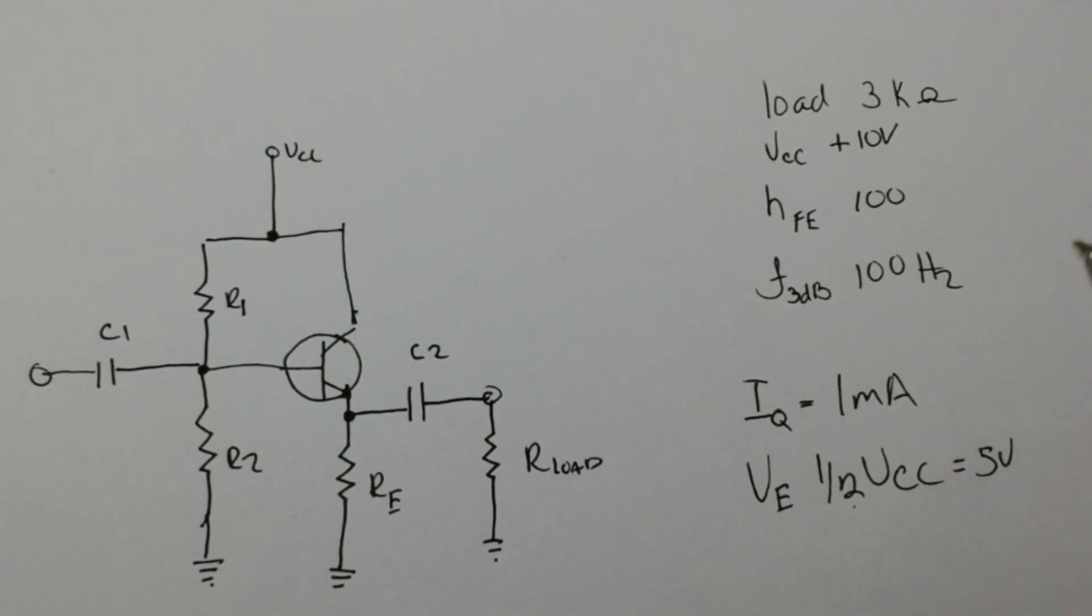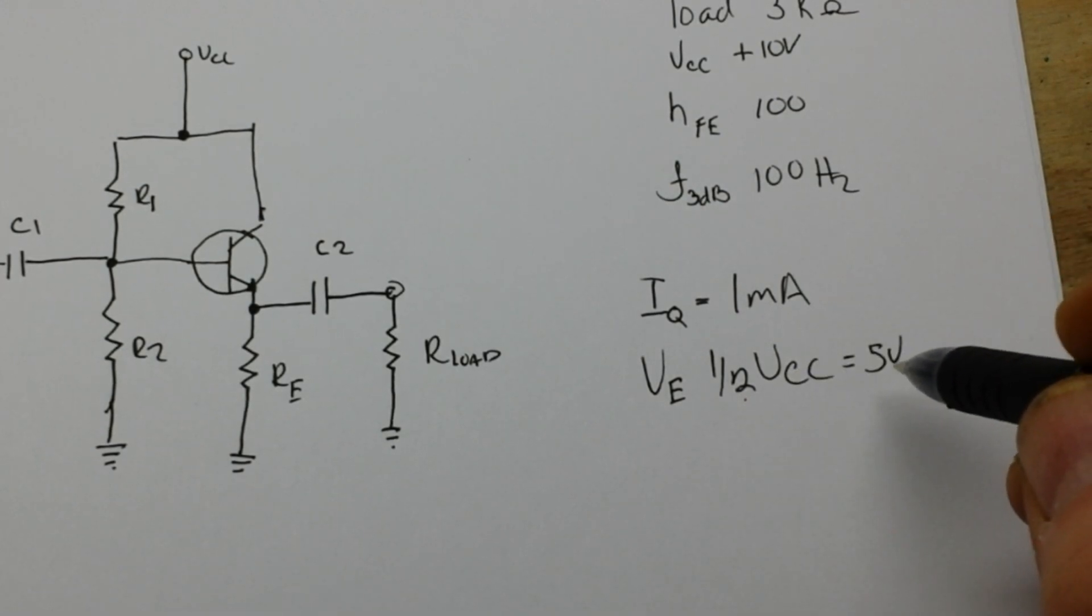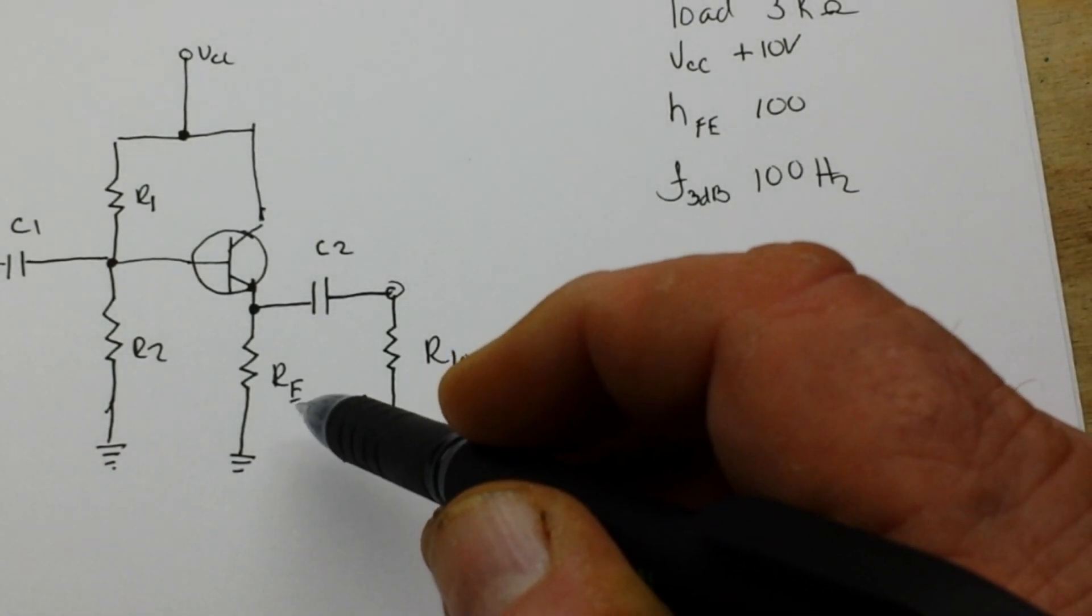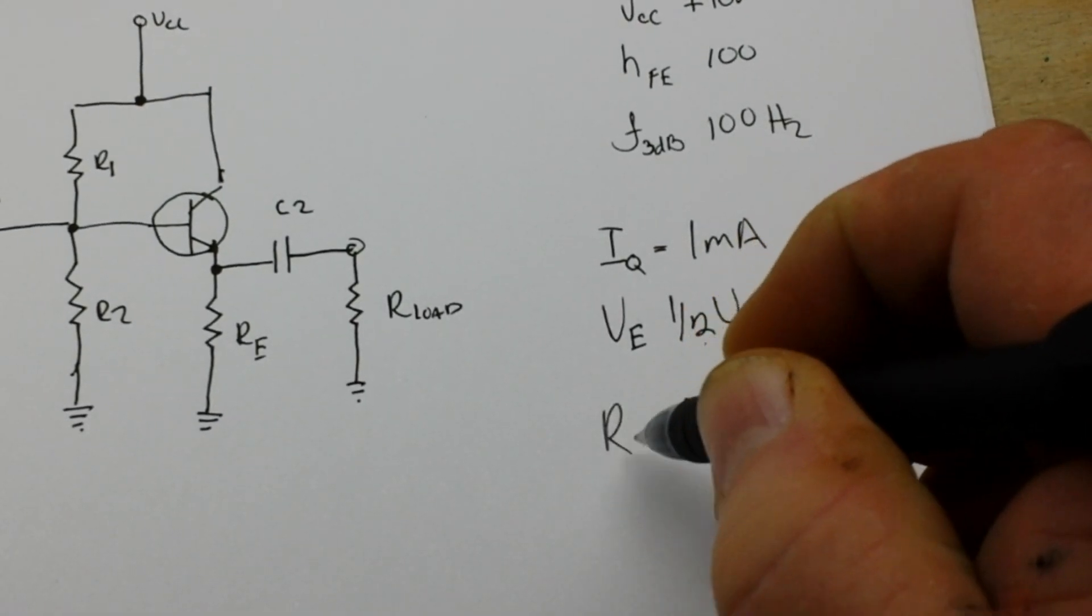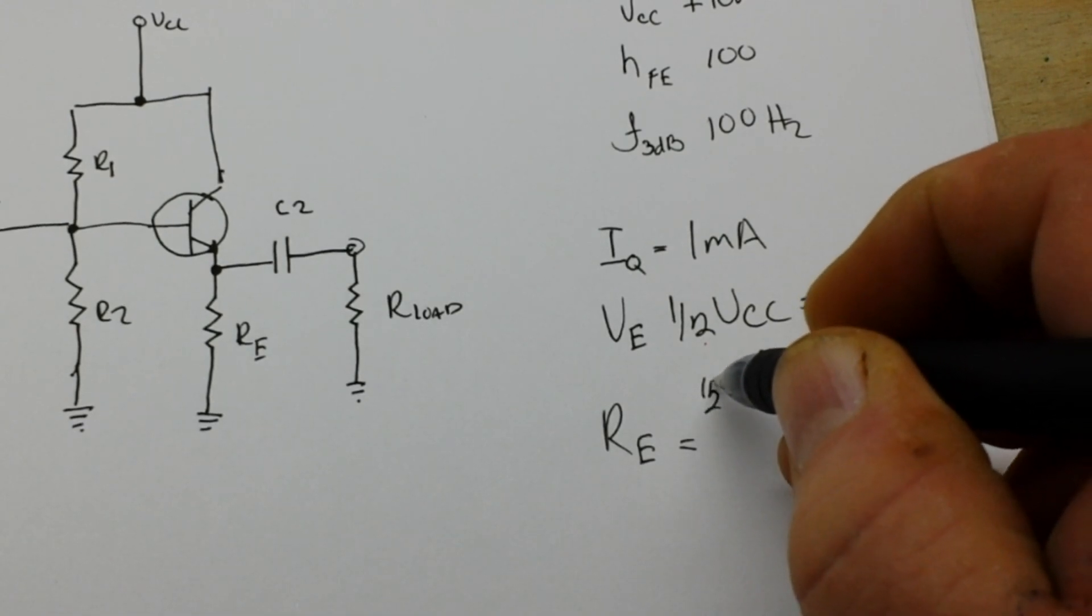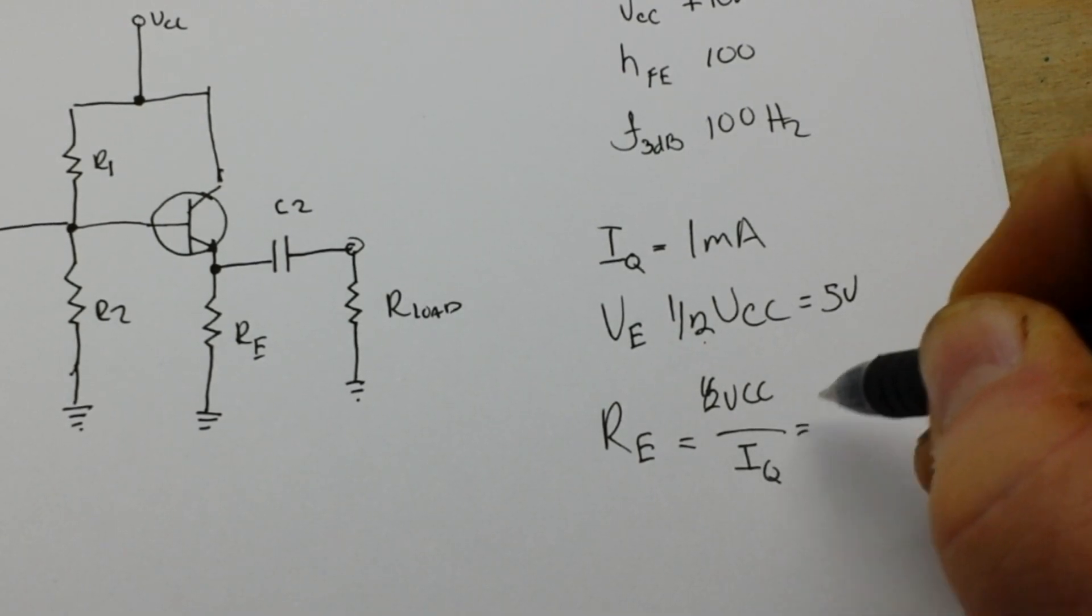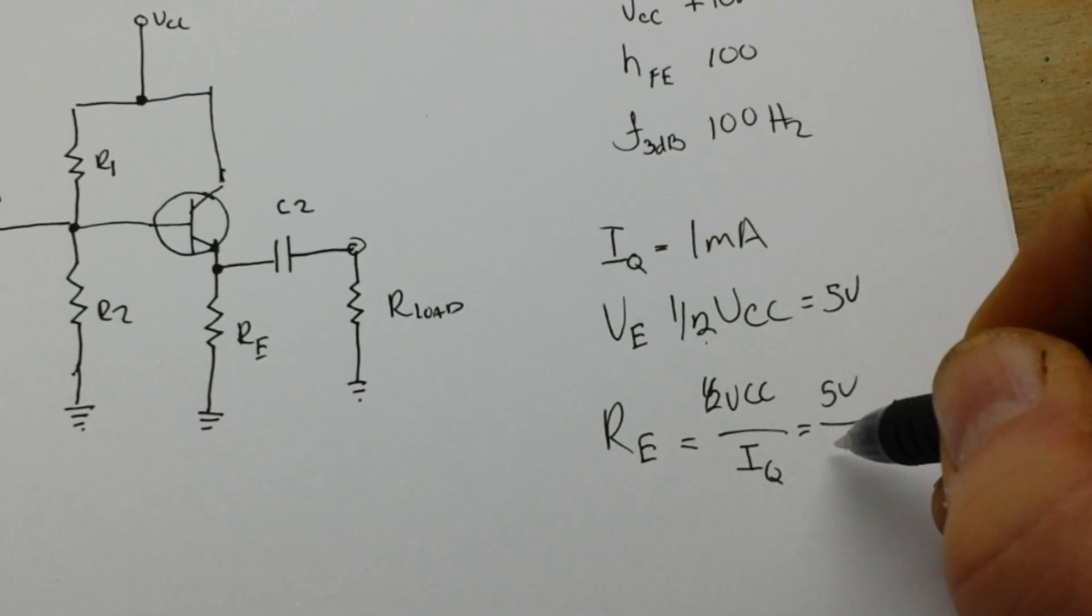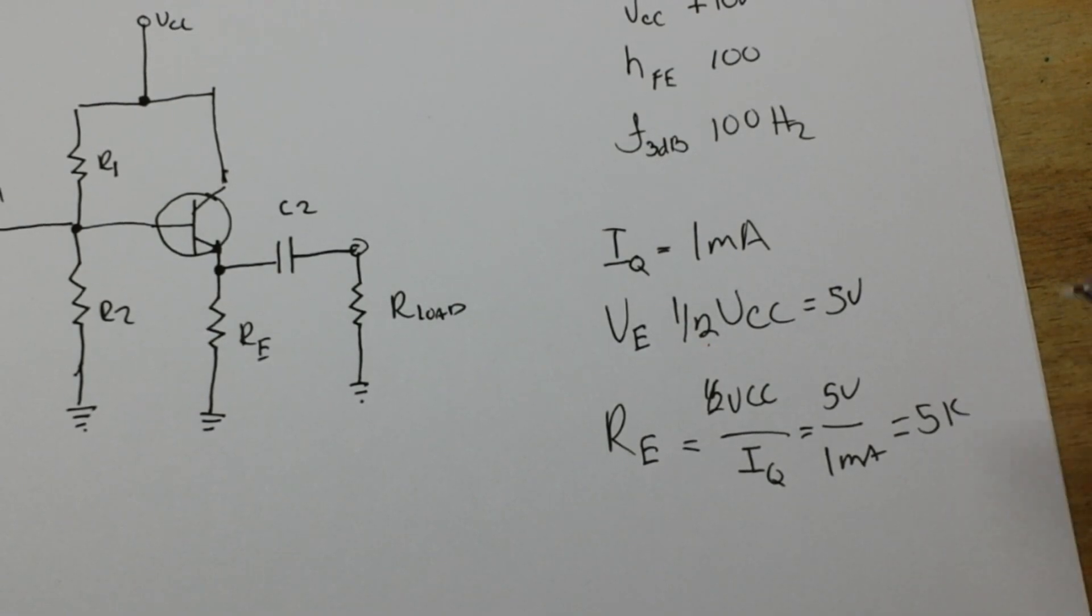So now that we have these couple pieces of information we can start thinking. We can say that to set VE at five volts and still get our IQ of one milliamp using RE, we can simply apply Ohm's law. We can start out by saying RE is equal to one half VCC over IQ, and that's five volts over one milliamp or five K. So we now know that RE is equal to five K.